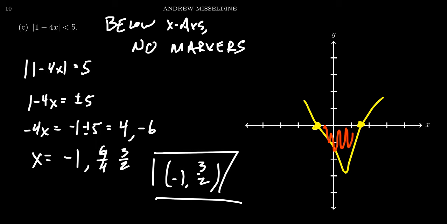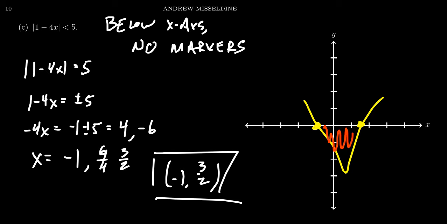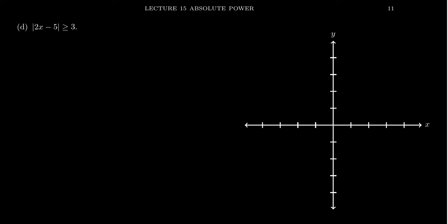A student once made a nice observation: when you look at absolute value inequalities, it's like looking at a bird. You're always looking for either the beak of the bird or the wings of the bird. At SUU, our mascot is the Thunderbirds, so you can think of it that way — when you draw an absolute value graph and solve an inequality, you're either looking for the beak of the Thunderbird or the wings of the Thunderbird. Those are always the options.